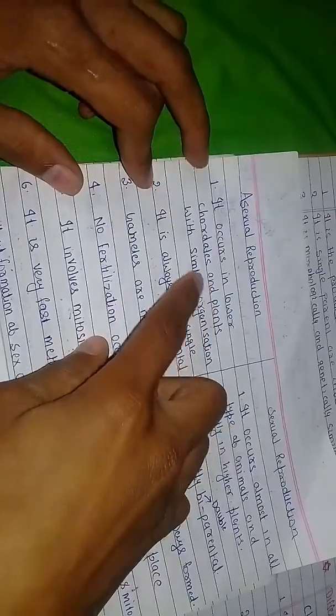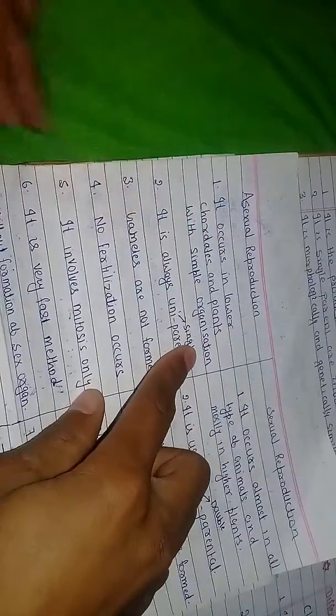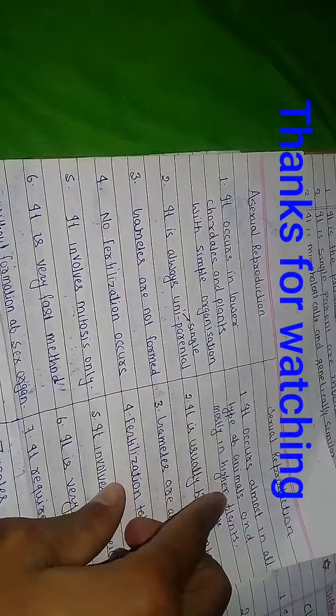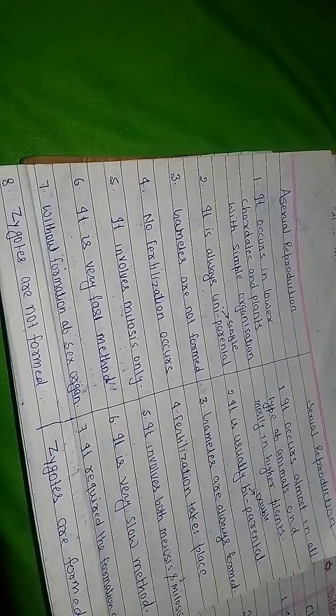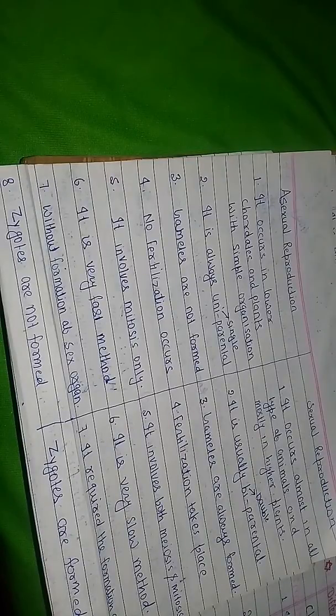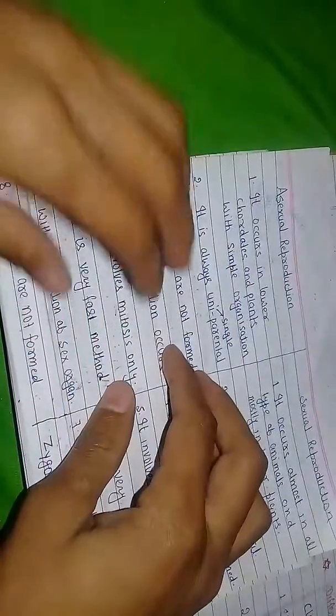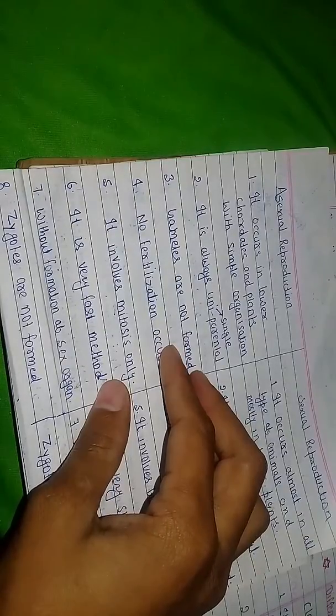It occurs in lower organisms and plants with simple organization. And the second one is sexual reproduction. It occurs almost in all types of animals and mostly in higher plants. Here the sexual reproduction and asexual reproduction, both are very important and there is something difference between both.